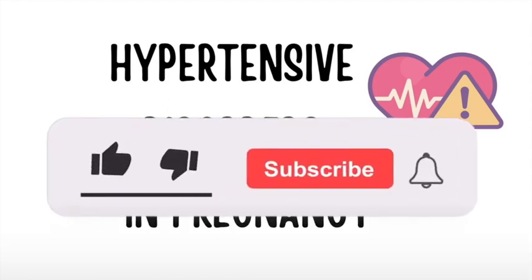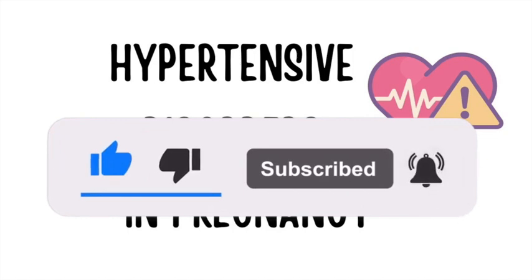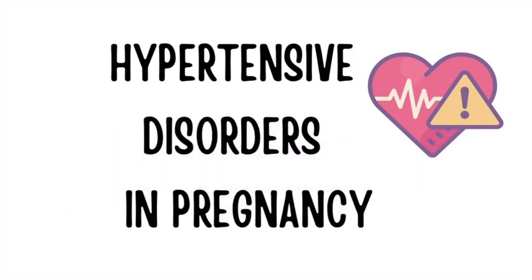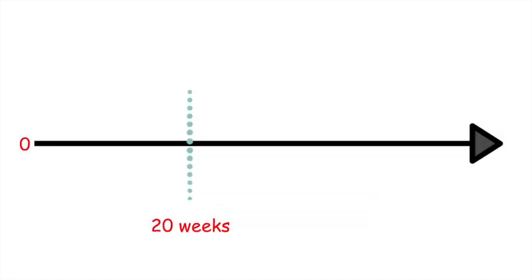To get a general overview of hypertensive disorders in pregnancy, let's take a look at this graph. It's going to be a simplified way for you to remember them. On this graph, 20 weeks means 20 weeks gestation. So chronic hypertension occurs at less than 20 weeks, and the name kind of tells us what it's about. It's hypertension — a chronic disorder seen in a lot of people in the general population.